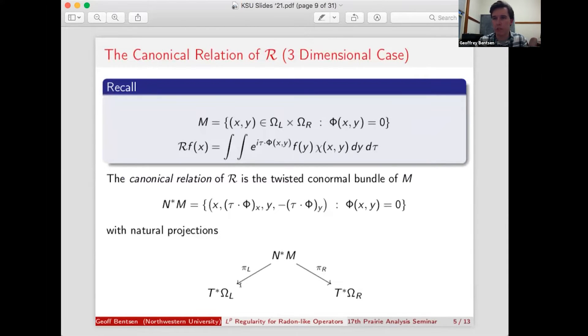Now, since we know something a little more explicitly, we have a formula for our local radon-like operator, we can describe what this canonical relation is. It turns out it's the twisted conormal bundle of our manifold M from before. And by twisted, I just mean I've swapped some of the order of the coordinates and I've made this last term negative. And that's just for purposes of composition calculi from the theory of FIOs.